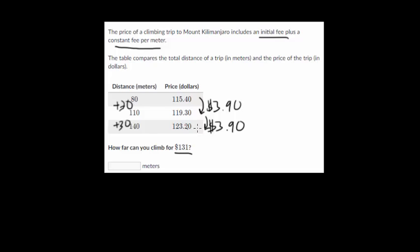So now let's see if we can extrapolate here. It looks like I'm dealing with the price side because I got to get to $131. If I add another $3.90, that would bring me to $127.10. And over here, I have to add 30 to my distance, so that would be at 170 meters.